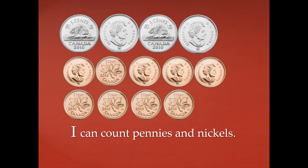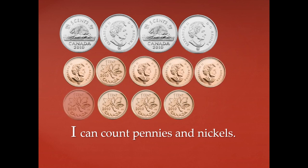Here we have our nickels and pennies. Whenever we're counting them, it's good to separate them into groups so that we can count all of the same types of coins at the same time. Let's start by counting our nickels: 5, 10, 15, 20, 21, 22, 23, 24, 25, 26, 27, 28, and 29. There are 29 cents here.